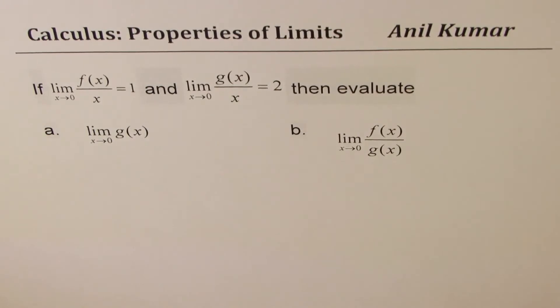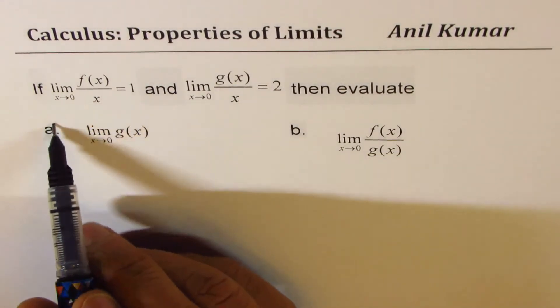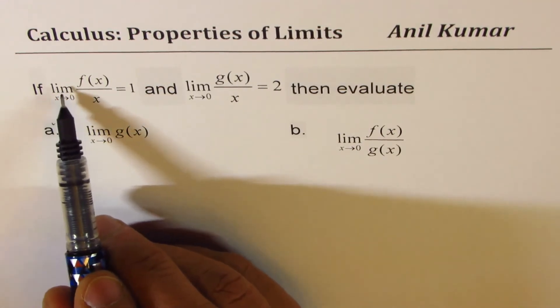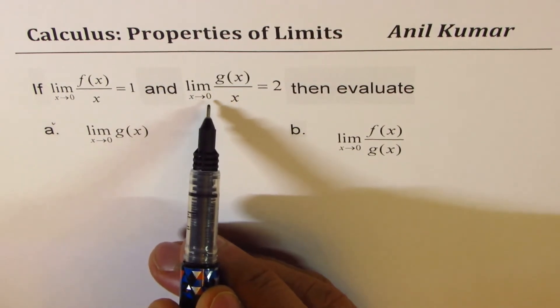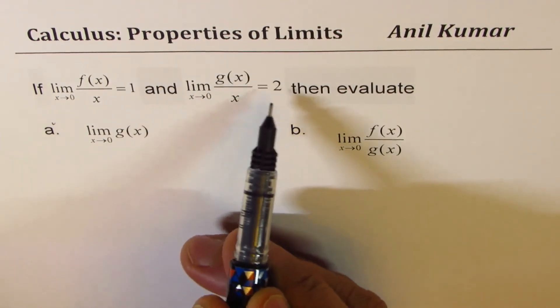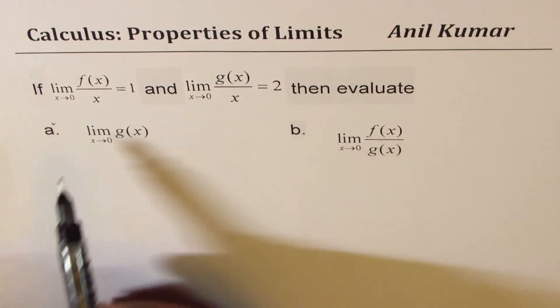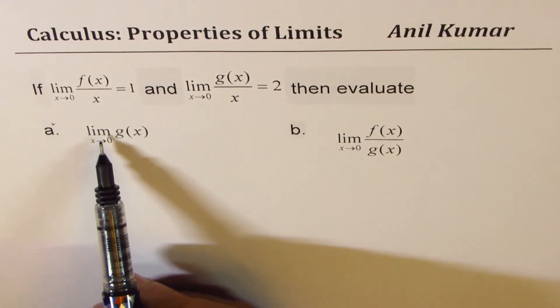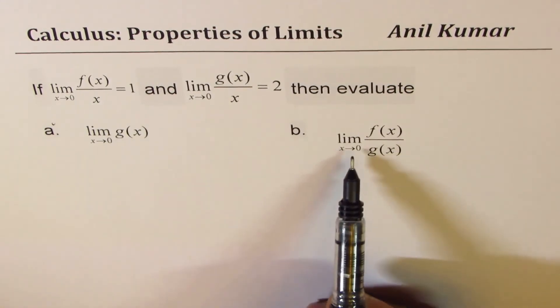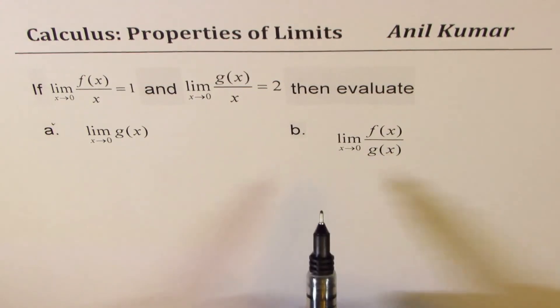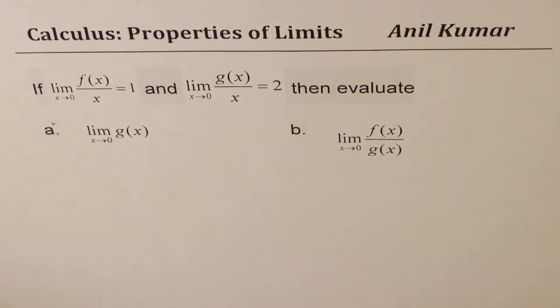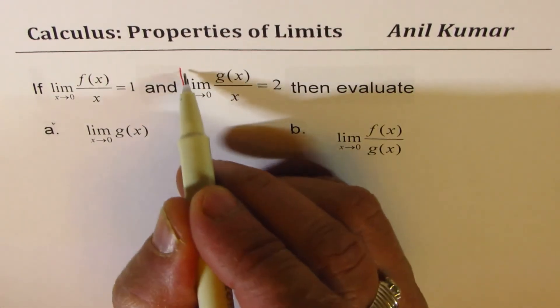The next question: we are given that limit as x approaches 0 for f(x) over x equals 1, and limit as x approaches 0 for g(x) over x equals 2. We need to evaluate two limits: first, limit as x approaches 0 for g(x), and second, limit as x approaches 0 for f(x) over g(x).